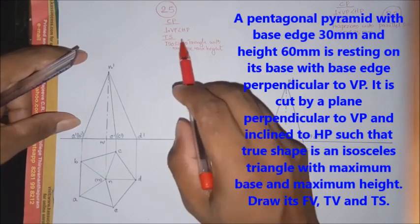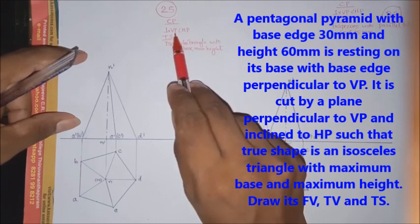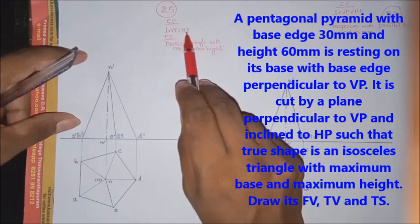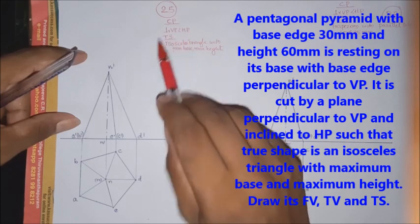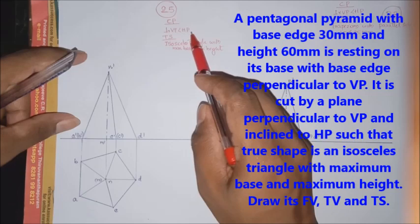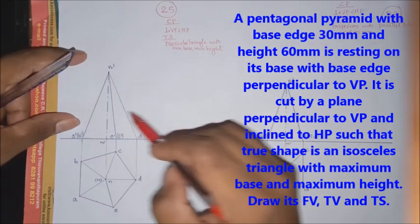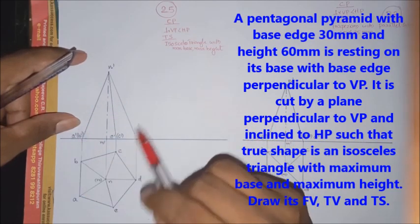Second, cutting plane condition. Cutting plane condition, it is perpendicular to VP and inclined to HP. So, perpendicular to VP and inclined to HP, we will cut here. But inclined to HP, how many inclined to HP that is not the same, but that is not the passing point. Then, we will cut here section plane. This is the same thing now.